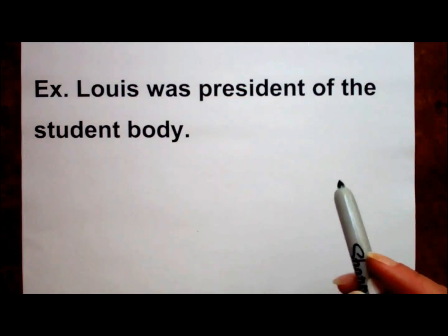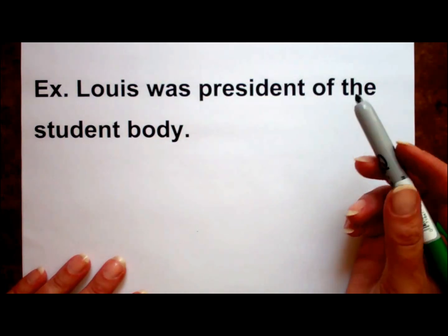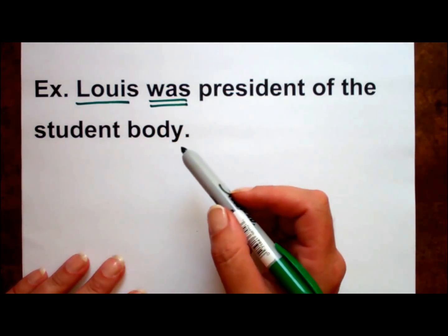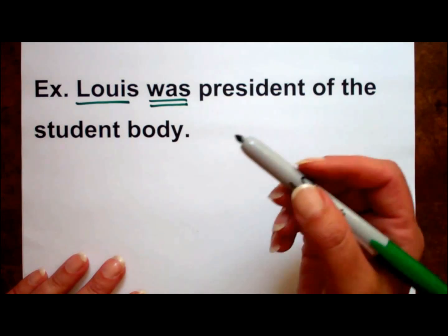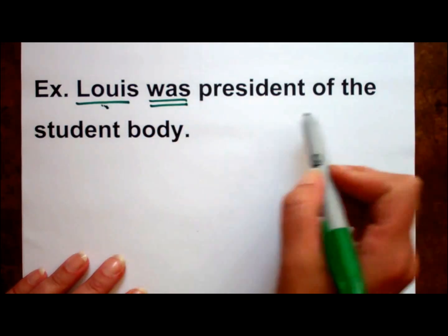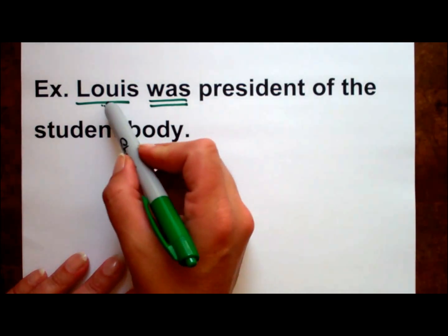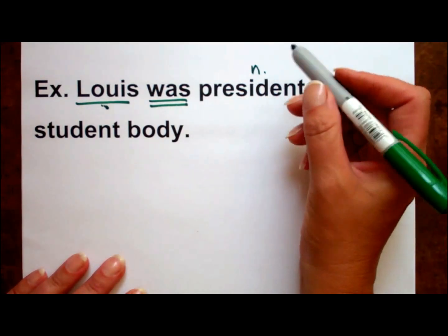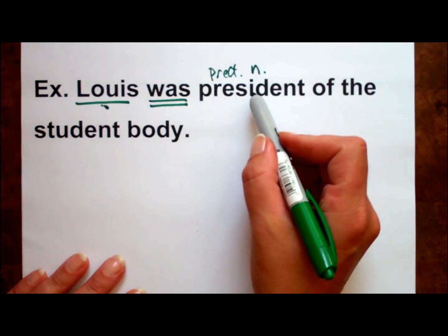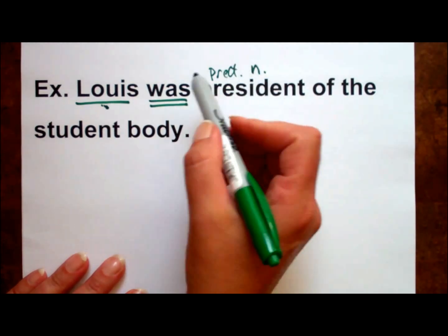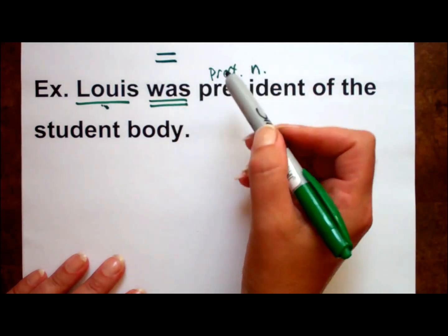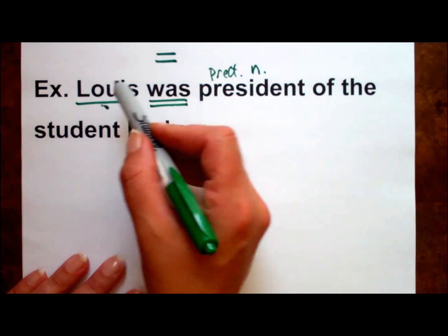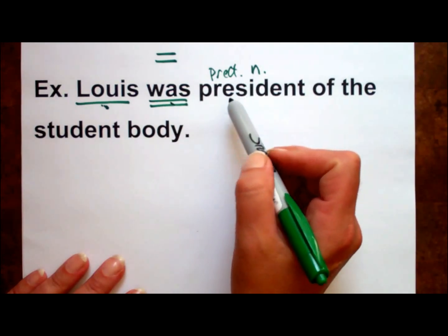Now let's look at an example. Louie was president of the student body. Let's start by finding that linking verb — it's one of the really easy ones: was. The subject, of course, is Louie. Remember that linking verbs have no meaning by themselves; they join the subject to something in the predicate. Here, Louie is linked to the word president. And because president is a noun, we know we have ourselves a predicate nominative. Think of the linking verb as an equal sign: Louie equals president. If we swap that around, we'd have president equals Louie — a good indication that this is a linking verb and that this is a predicate nominative.